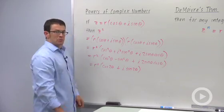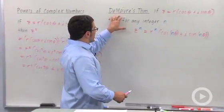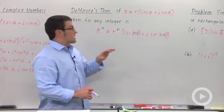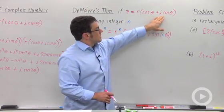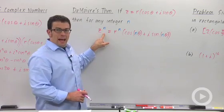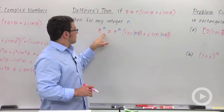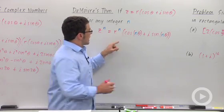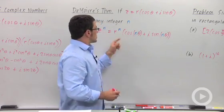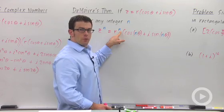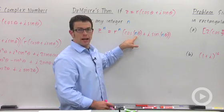Let's generalize this result. The generalization of this result is actually called de Moivre's theorem. And it says if z is r cosine theta plus i sine theta, then z to the n, where n is any integer, is r to the n times cosine of n theta plus i sine n theta. So all you have to do is raise the modulus to the nth power and multiply the argument by n.